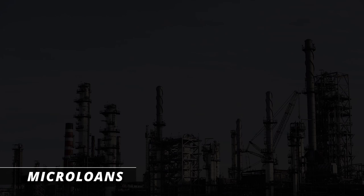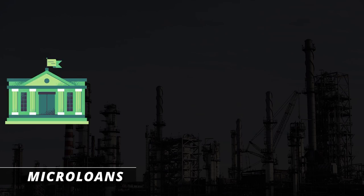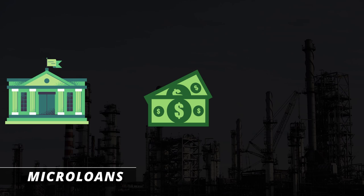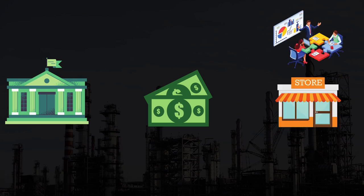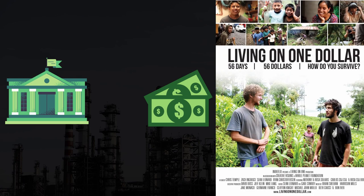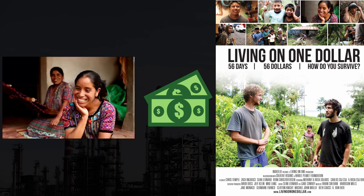Other methods of assisting women during the development process would be through microloans. Think of microloans as small banks that give out loans of cash to women. This line of credit provides opportunities for women to further themselves economically. This can be seen in an amazing documentary called Living on a Dollar, which is free on YouTube, where a woman named Rosa uses this loan to make blankets and uses that money to fund her education.